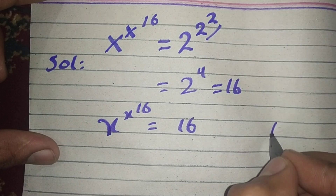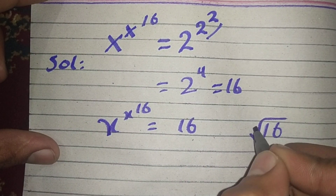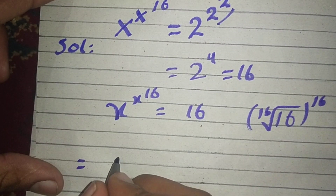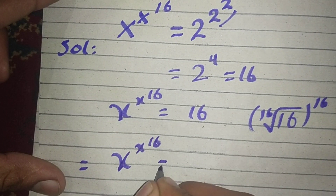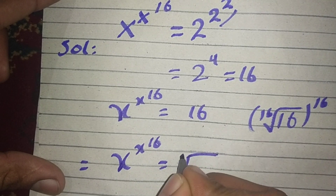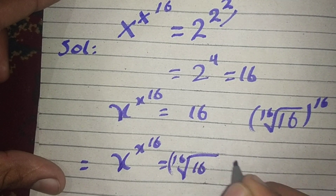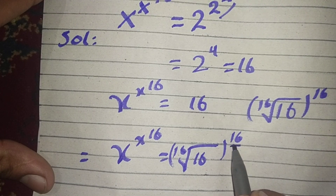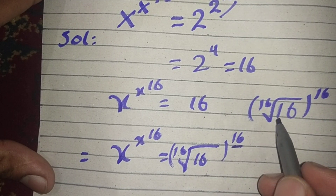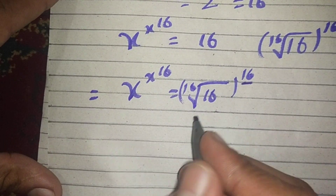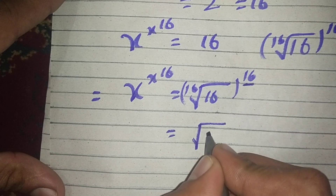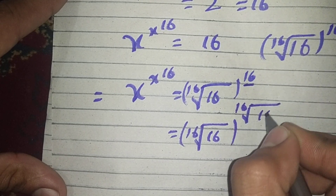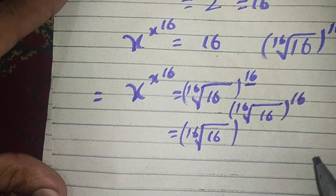Now we can write 16 as the 16th root of 16, raised to the power 16. So this equation becomes x power x power 16 equals the 16th root of 16, raised to the power 16. Again, we have 16 in the power, and we can write this 16 as the 16th root of 16, raised to the power 16. So this becomes the 16th root of 16, raised to the power of the 16th root of 16, raised to the power 16.